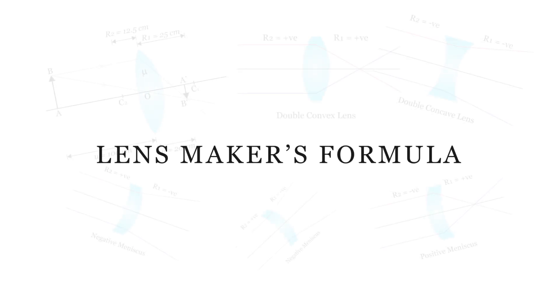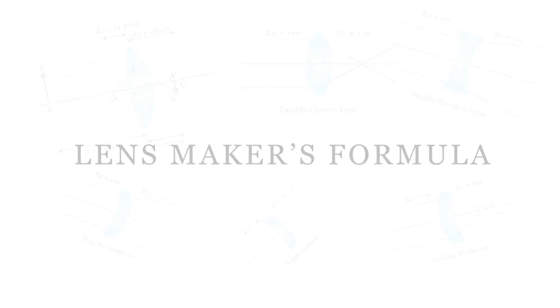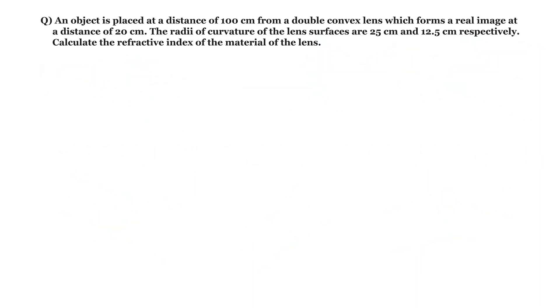I am going to solve a numerical problem on the lens maker formula. An object is placed at a distance of 100 cm from a double convex lens, which forms a real image at a distance of 20 cm. The radii of curvature of the lens surfaces are 25 cm and 12.5 cm respectively. Calculate the refractive index of the material of the lens.